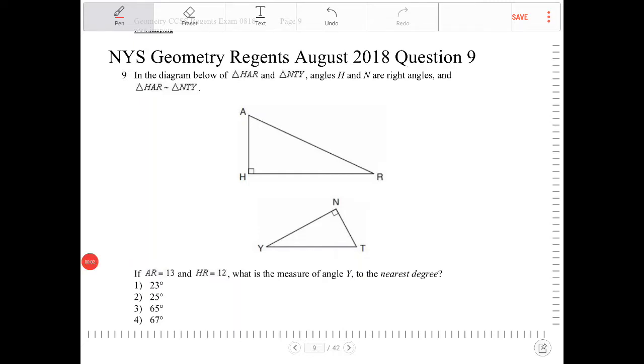In the diagram below of triangle HAR and triangle NTY, angles H and N are right angles, and triangle HAR is similar to triangle NTY.